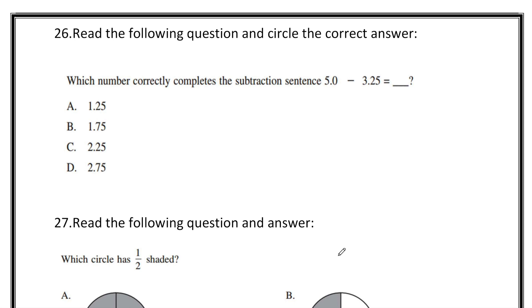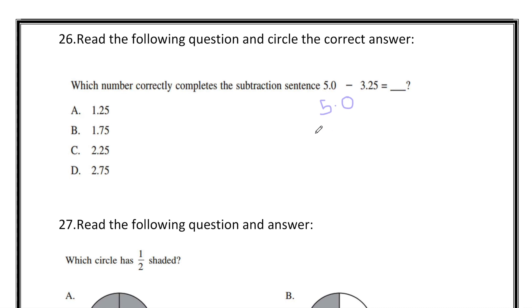Which number correctly completes the subtraction sentence 5.0 minus 3.25? So first you write 5.0, below it we write 3.25.